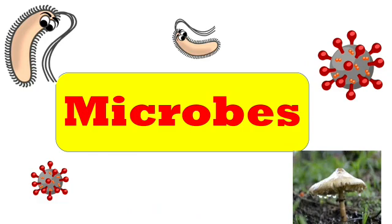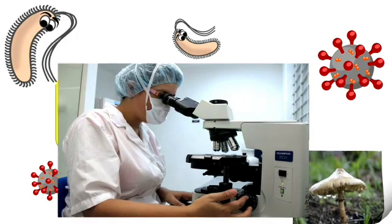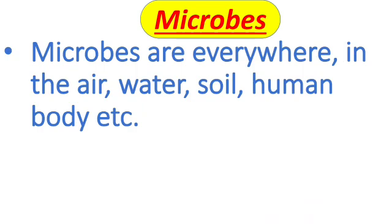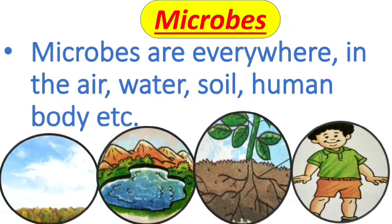Microbes or microorganisms are so small that they can't be seen with our naked eyes. We can see them with the help of a microscope. Microbes are everywhere — in the air, water, soil, and even in human beings. Some microbes are also present in our body.